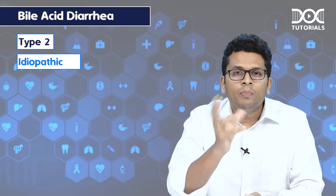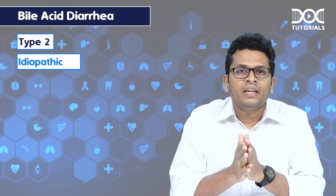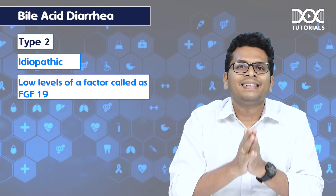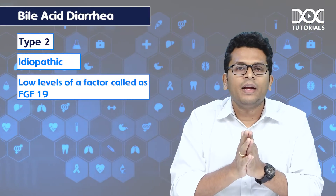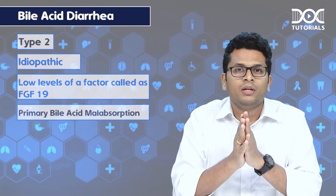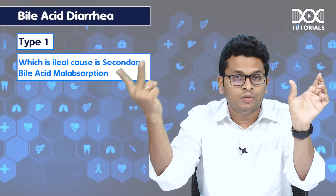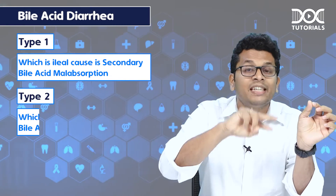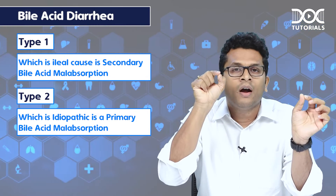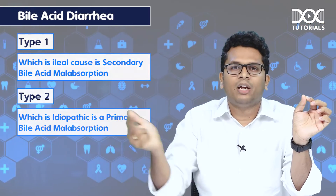Type 2 is idiopathic, but off late we know what it is secondary to — it is because of low levels of a factor called FGF19. This is actually primary bile acid malabsorption. So to summarize: type 1, which is ileal cause, is secondary bile acid malabsorption; type 2, which is idiopathic due to reduced FGF19 levels, is primary bile acid malabsorption.